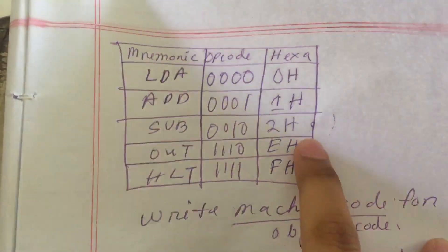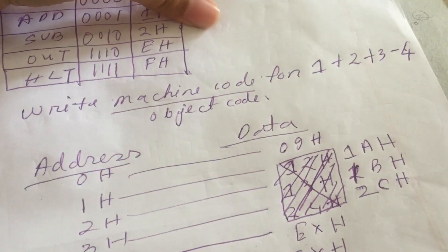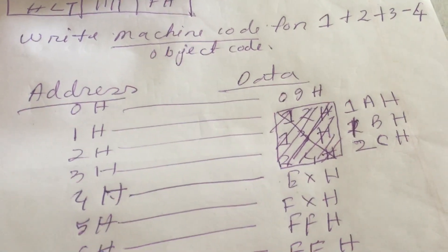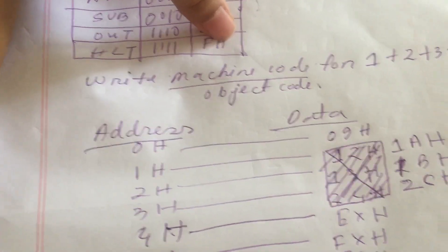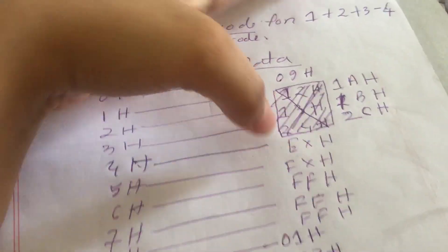So 2 and then this CH, 2CH. And for OUT, here is this, and you have to always write X between this, so this becomes EXH. And for HLT, it is FXH, and rest of the space will be filled by FFH.